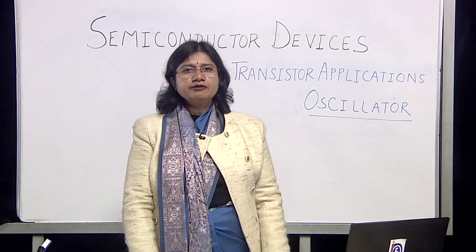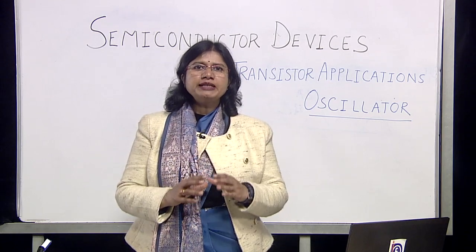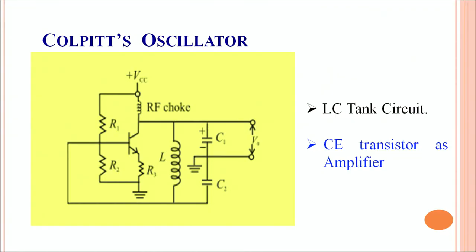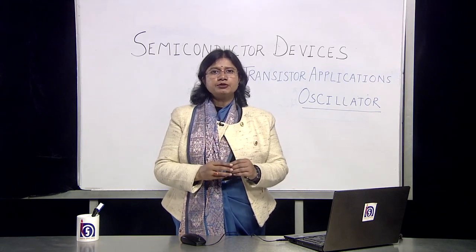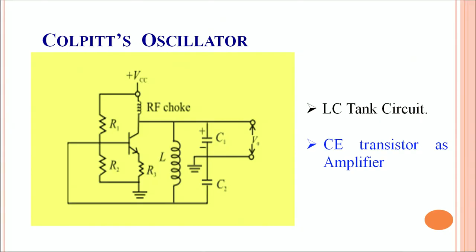To understand the working of an oscillator, we discuss a simple Colpitts oscillator. This is one of the simplest oscillators, having an amplifier followed by a 180 degree phase shift feedback mechanism. Overall there are two 180 degree phase shifts so that the pulse generated is in phase with the input signal. We have an LC tank circuit which acts as an oscillating circuit, and the transistor is typically used in common emitter configuration.